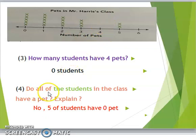Do all the students in the class have a pet? Explain. Of course, no. Why? Because if you look at 0, 0 means no pets here. So, we have 5 students have 0 pets. Therefore, not all of the students in the class have a pet.